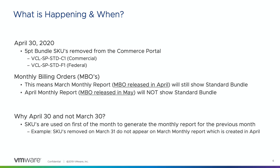Starting on April 30th the SKUs are going to be removed from the commerce portal. In the March monthly report we'll still release the five-point bundle standard bundle in the MBO, but for the April monthly report we're going to be removing it before that report is released. The reason it's April 30th and not March 30th is because we always remove the SKUs before the next MBO is released — if we remove the SKUs in March, they would not show up in the March report.